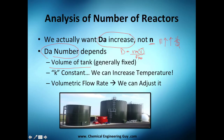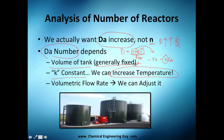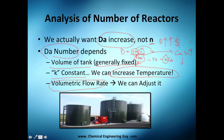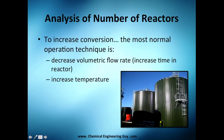How do you change the Damköhler number? Da involves the rate law, volume, and flow rate. You can change the tank volume, though it's generally fixed. You can change the rate constant k — since rate equals k·CA — by changing temperature: increasing temperature generally increases k. You can also change the volumetric flow rate, but increasing it decreases Da since it's in the denominator, so you want to reduce it.